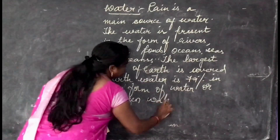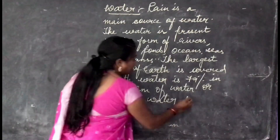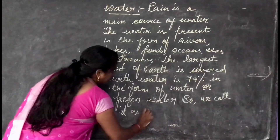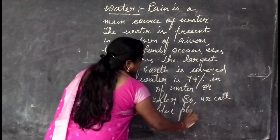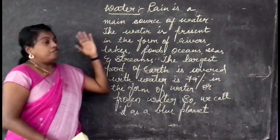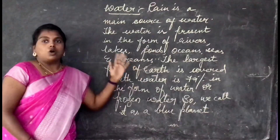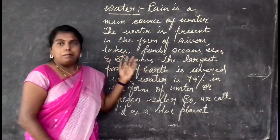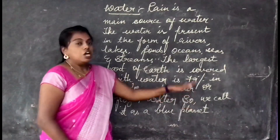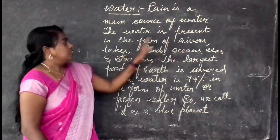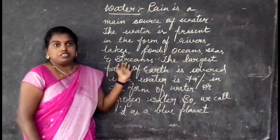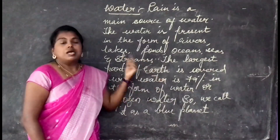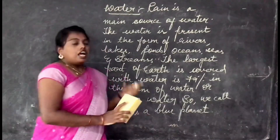Because so much of Earth is covered by water, people call it the blue planet. So, Earth's surface is made up of land and water: land is 21% and water is 79%. We can get water in different forms like rivers, lakes, ponds, oceans, seas, and streams. Land consists of mountains, valleys, plains, sandy beaches, deserts, and more.